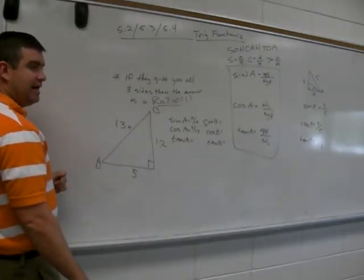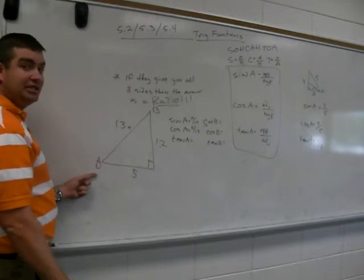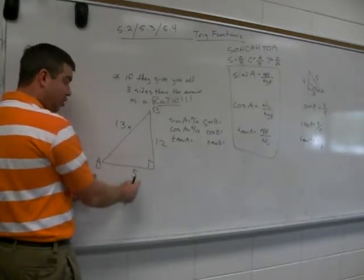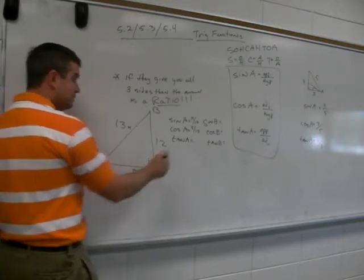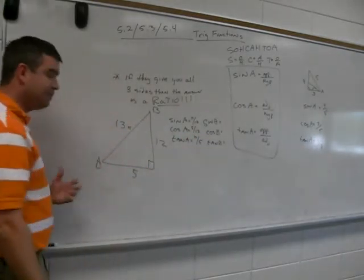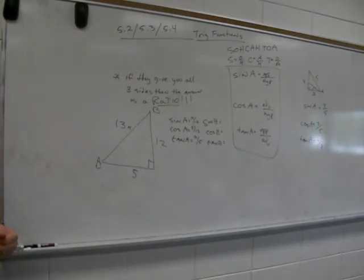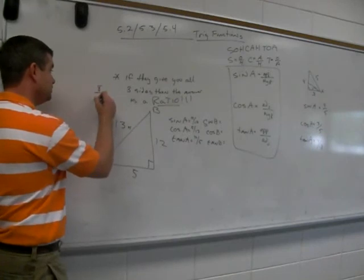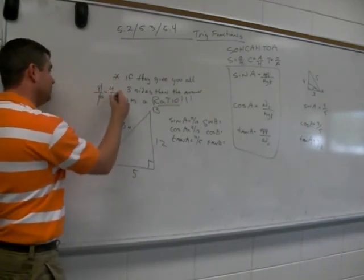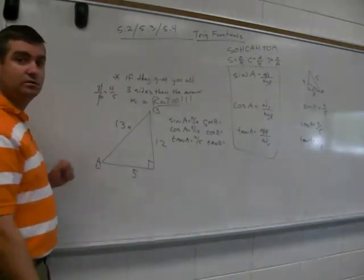Tangent of angle A. Here's angle A. The tangent of angle A would be what? Opposite over adjacent. So the answer would be 12 over 5. Opposite over adjacent. Can we simplify this? Yes. If your fraction was 8 over 10, you would most definitely cancel and get 4 over 5.